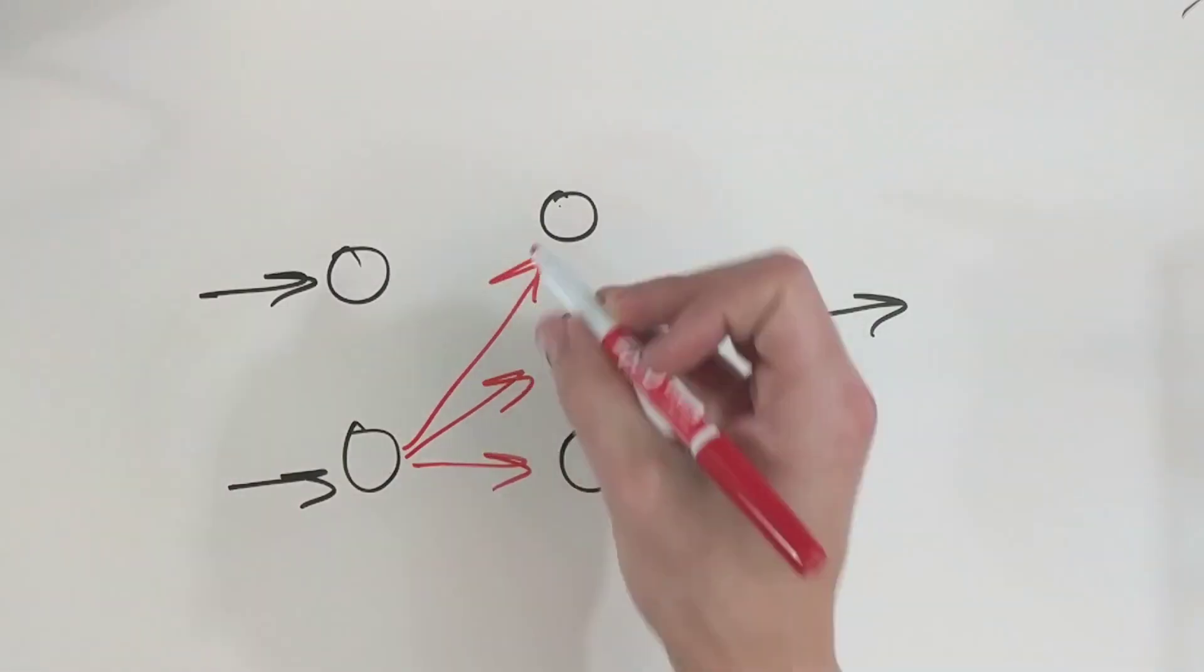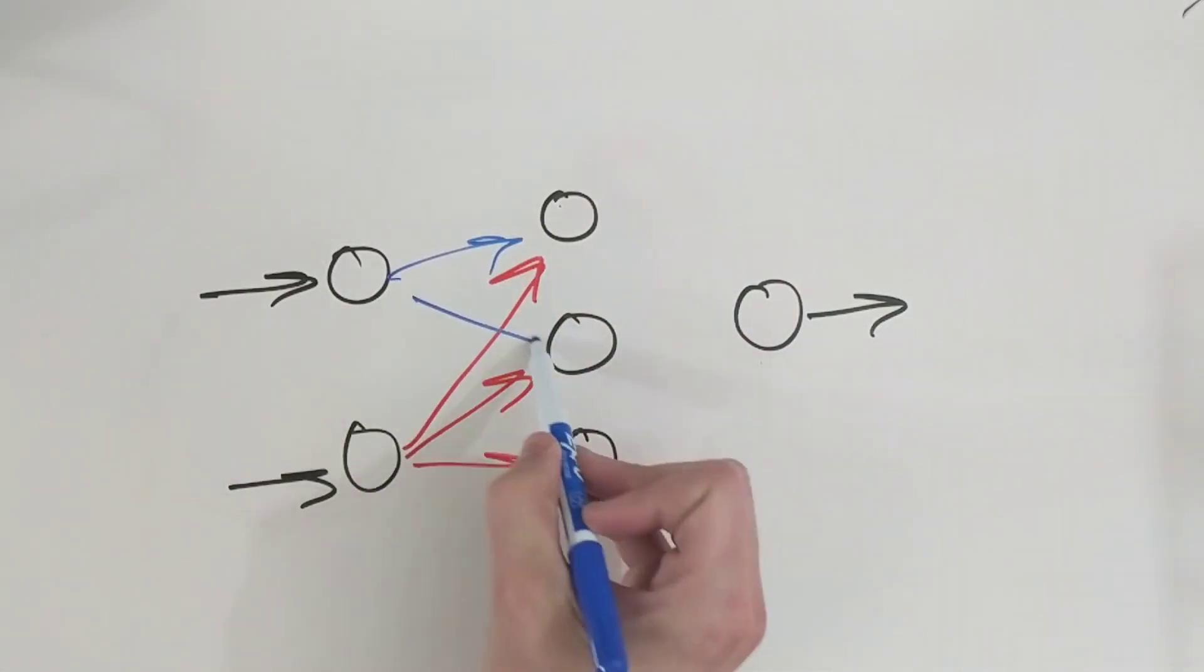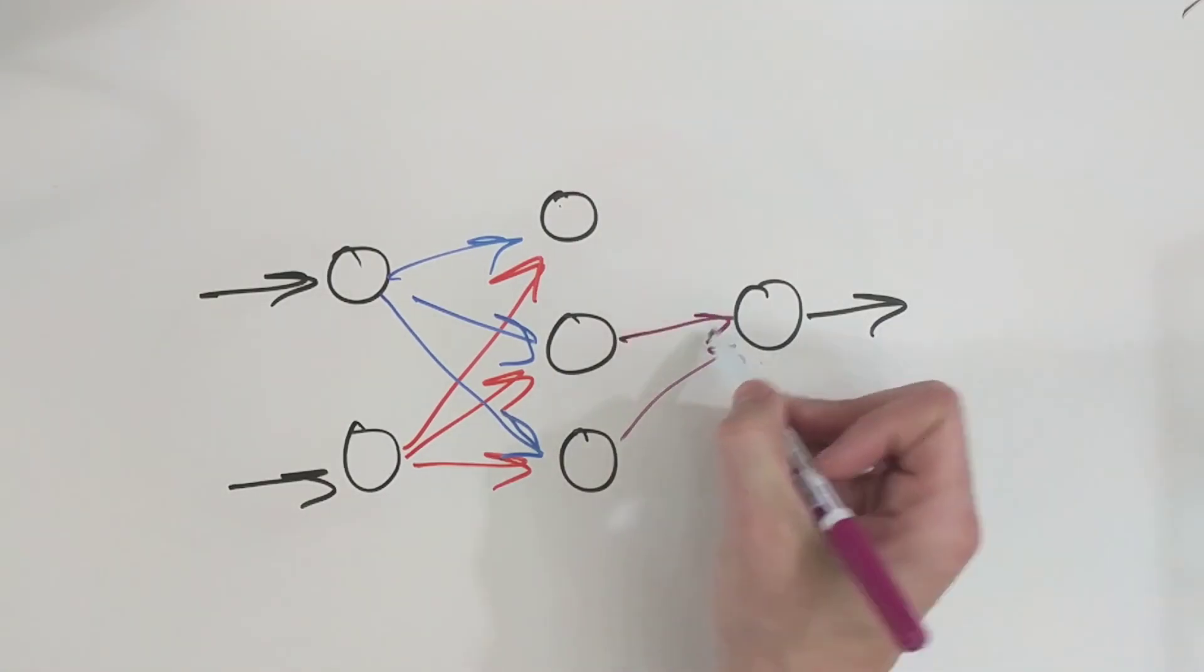For every layer in the network, we connect each neuron to every neuron in the layer before it. So for this example, the output node connects to every node in the hidden layer, and every node in the hidden layer connects to every node in the input.